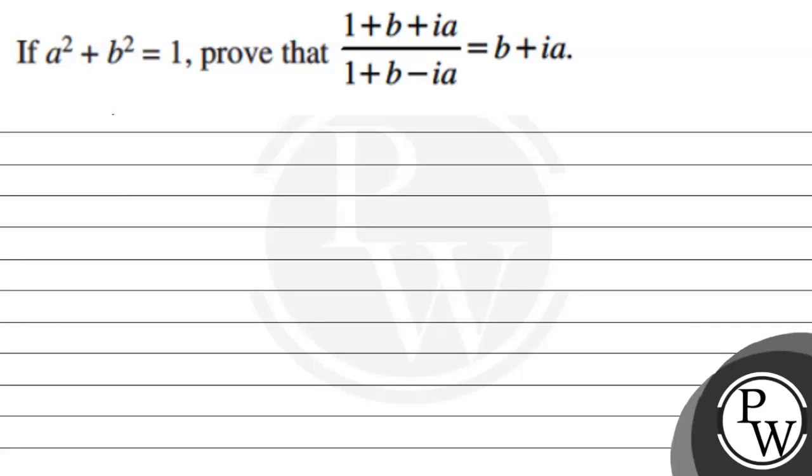Hello, let's first read the question. The question says that if a square plus b square is equal to 1, then prove that 1 plus b plus ia divided by 1 plus b minus ia is equal to b plus ia.